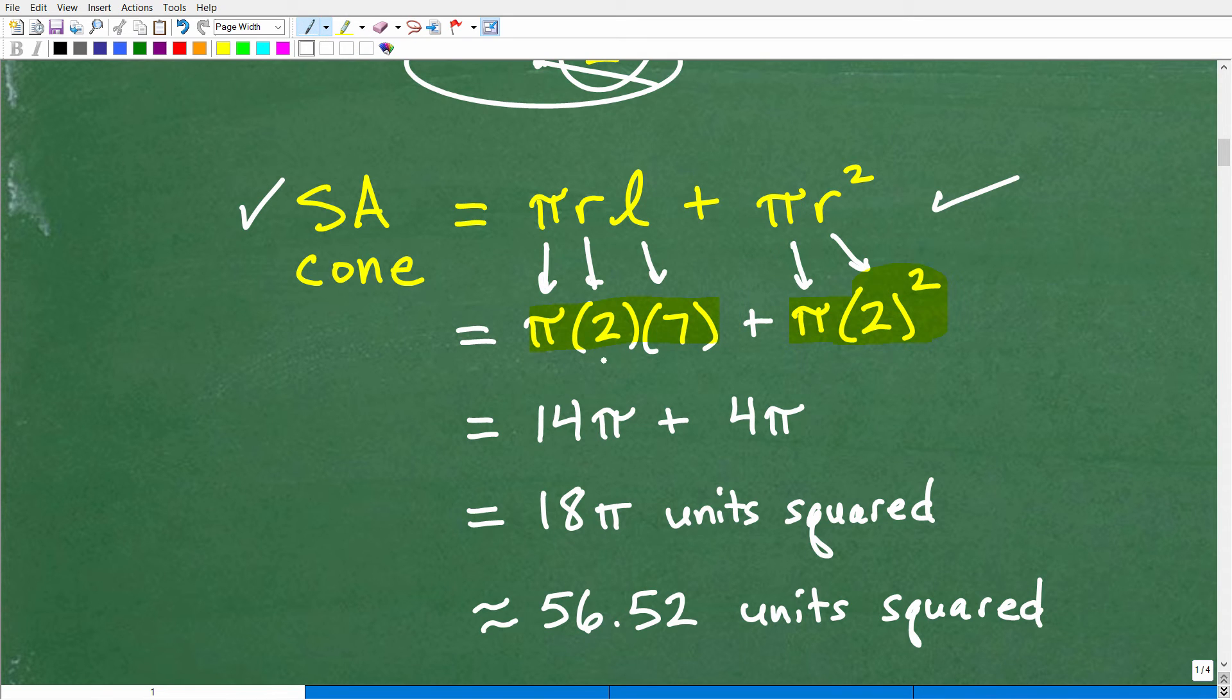Okay, so let's go ahead and get going here. So we have 2 times 7. That's going to be 14. So this right here, this whole product, we can write this as 14 pi. And then 2 squared is 4. So 4 times pi is 4 pi. So how many total pi do we have? Well, it's 14 pi plus 4 pi. So we have 18 pi total. So the surface area of this particular cone is exactly...